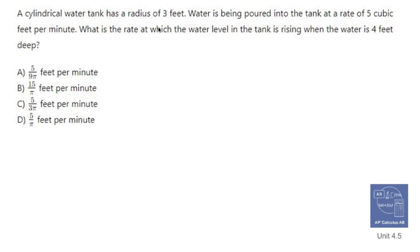A cylindrical water tank has a radius of 3 feet. Water is being poured into the tank at a rate of 5 cubic feet per minute. What is the rate at which the water level in the tank is rising when the water is 4 feet deep?